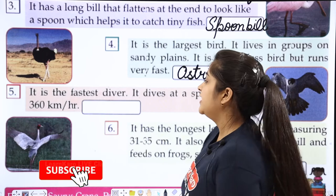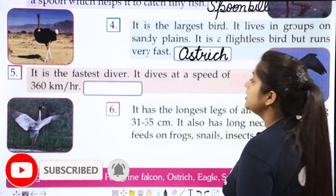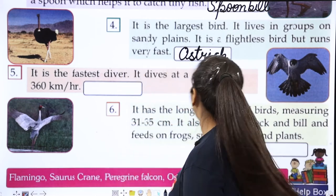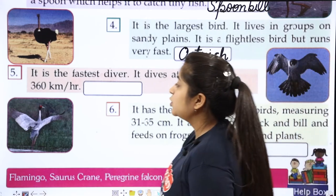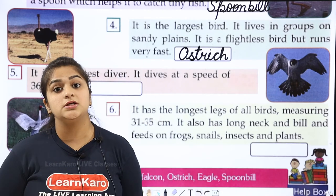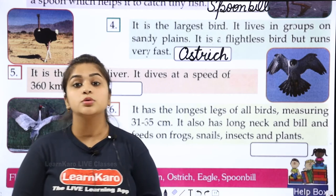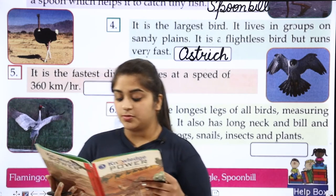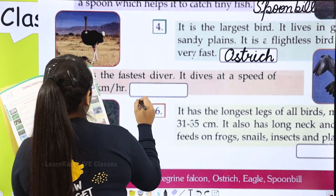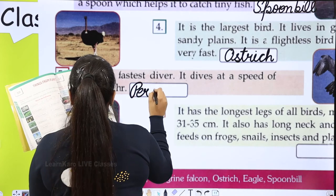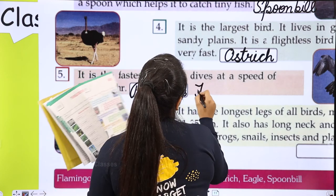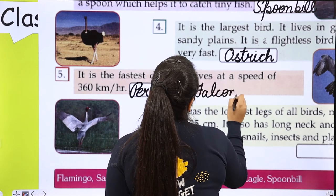Next. It is the fastest diver. It dives at a speed of 360 km per hour. And the name of the bird is Peregrine falcon — spelled P-E-R-E-G-R-I-N-E, Peregrine, F-A-L-C-O-N, falcon.